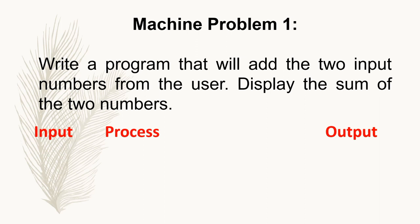By reading this machine problem, we understand that we need to make a program that will add two numbers coming from the user, then display the sum of those two numbers. Now, let's apply the steps in problem analysis. We have done the first step, which is to define the problem — which is to display the sum. The second step is to determine the output. So in this problem, what is the output?